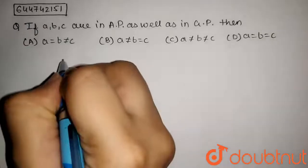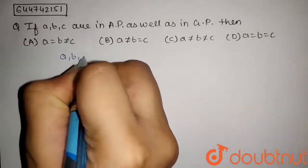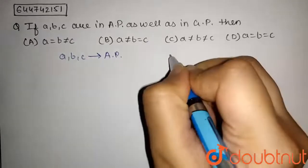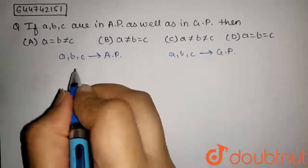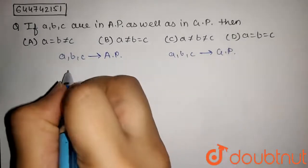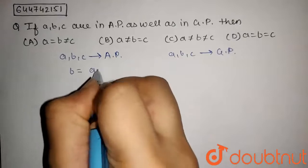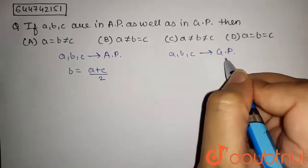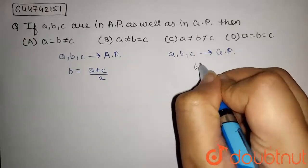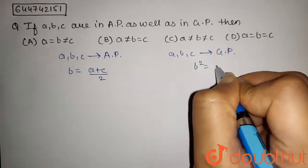Given that A, B, C are in AP and also A, B, C are in GP. As A, B, C are in AP, we can write B equals A plus C by 2. And as A, B, C are in GP, we can write B square equals AC.